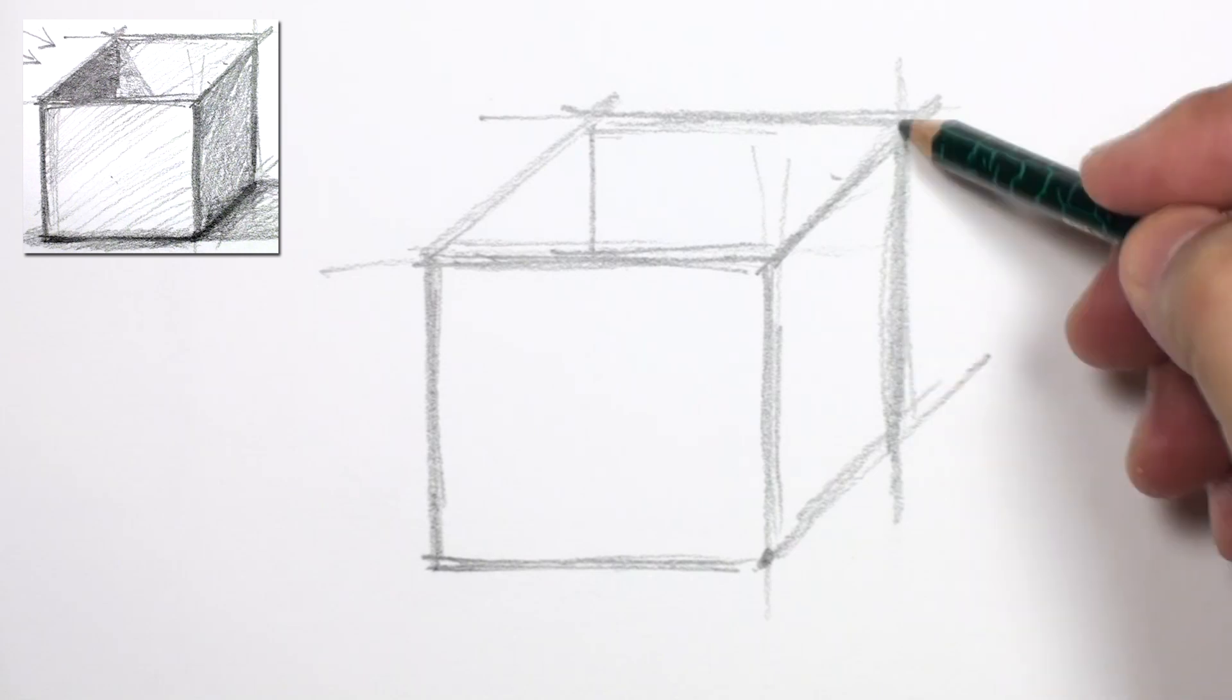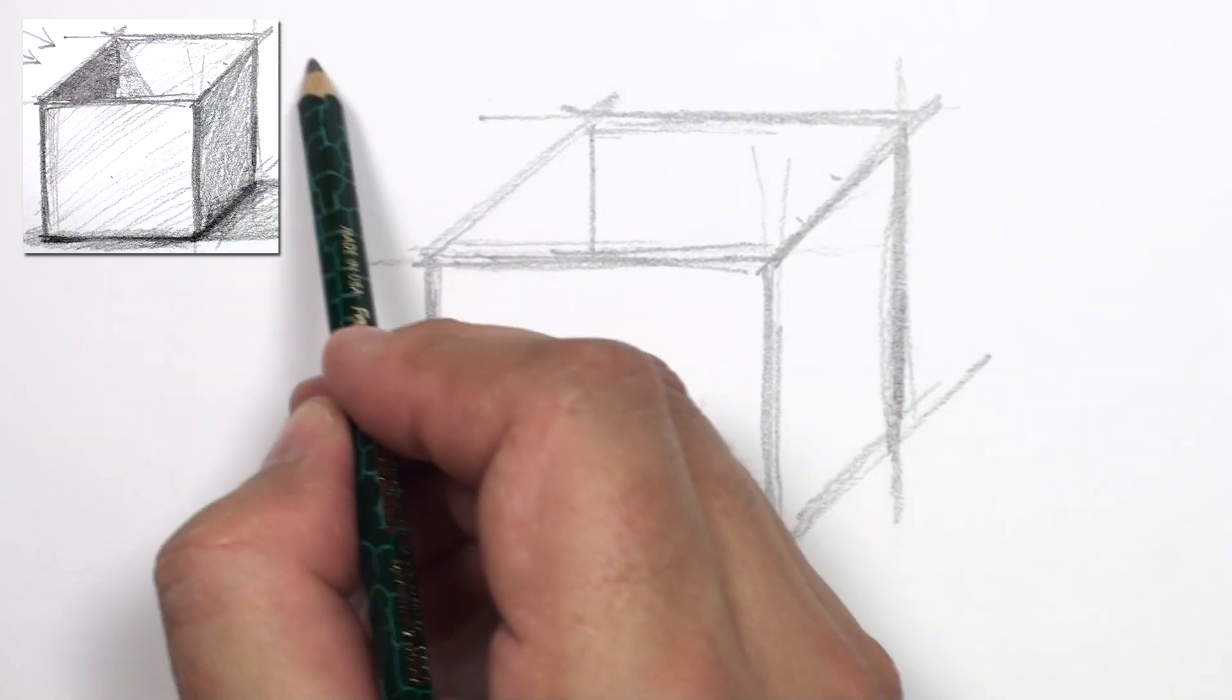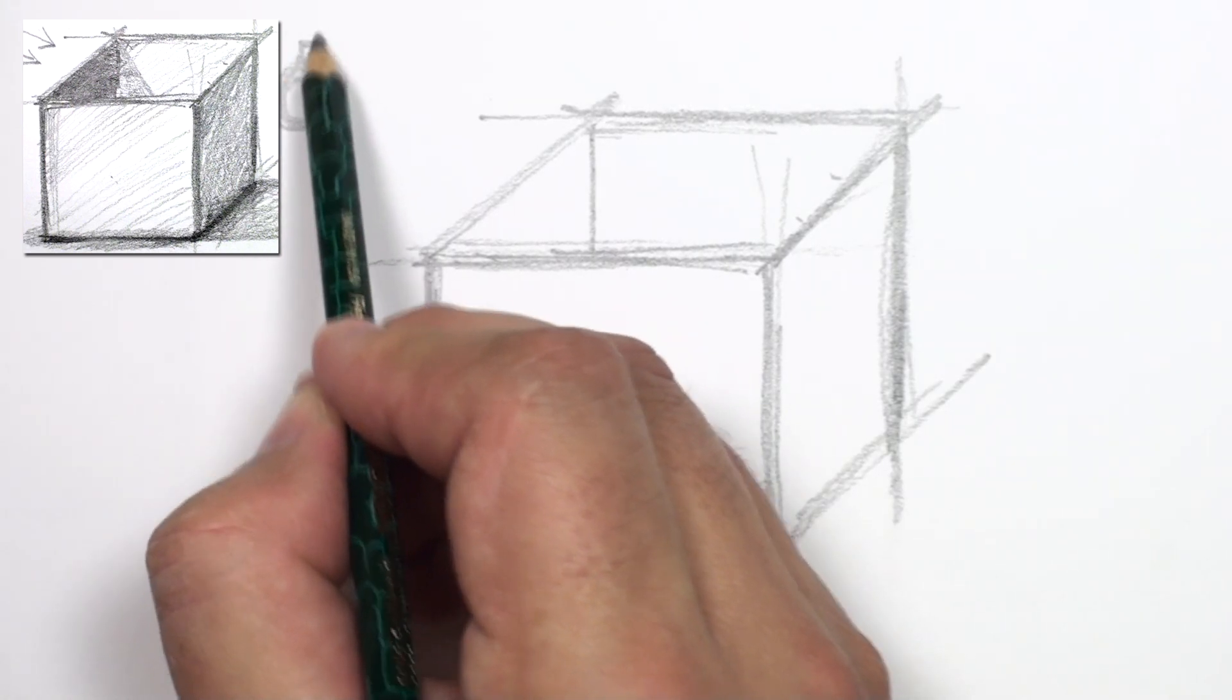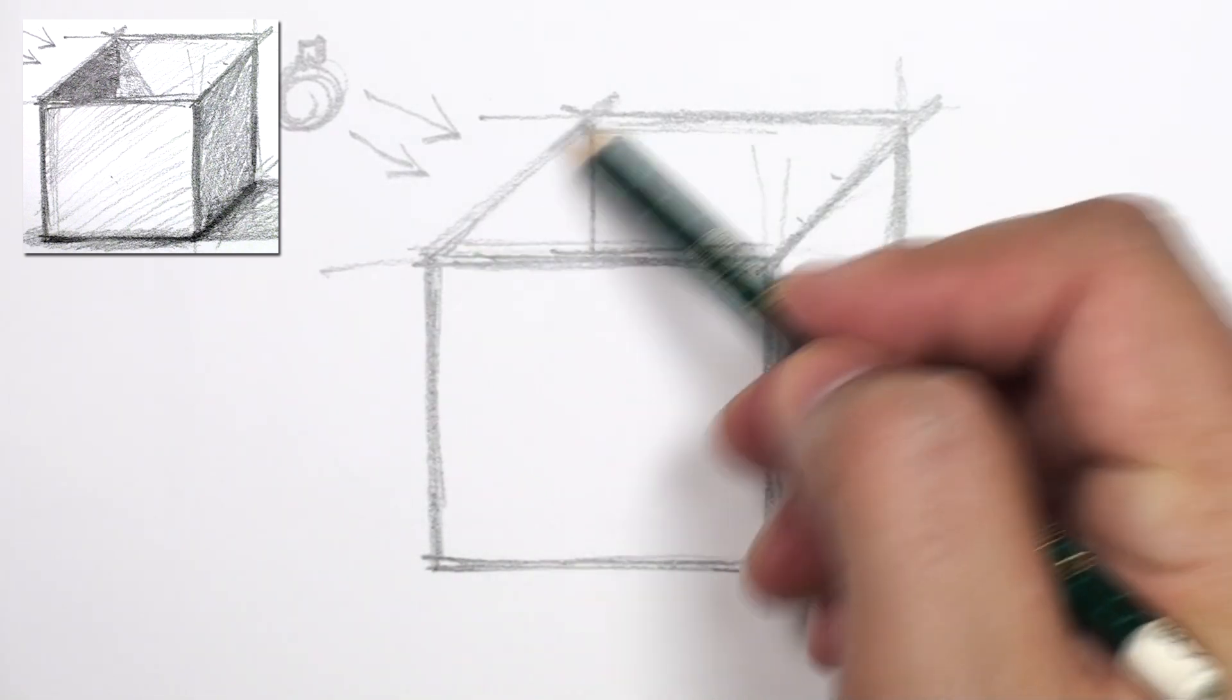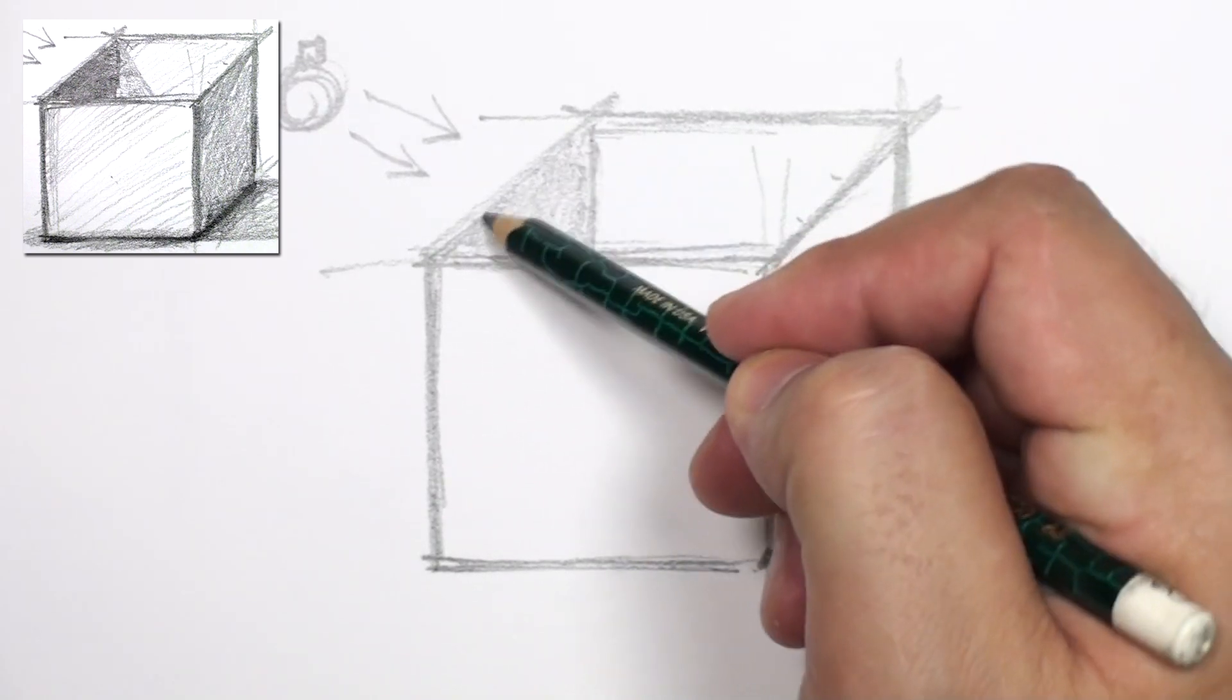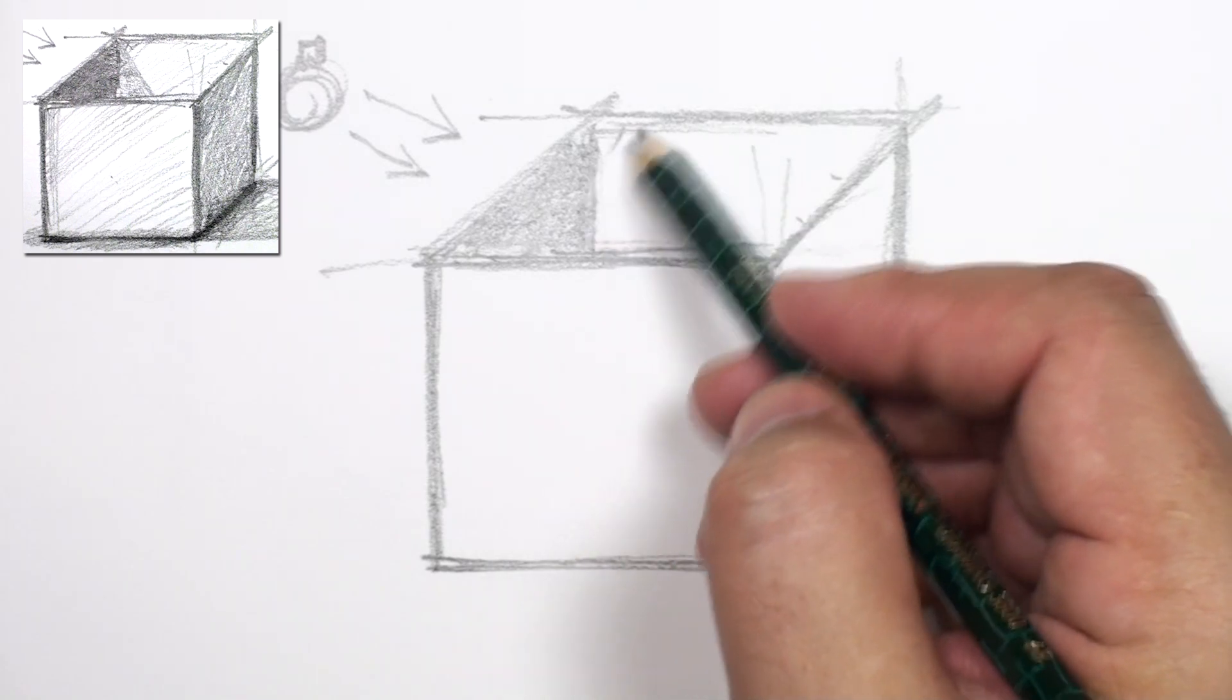Let's talk about shading this box. What we want to do is determine where the light is coming from, and let's say there's a light bulb over here, and the light is coming this way. So that's going to mean that this inside part of the box is going to be darker than this part right here.